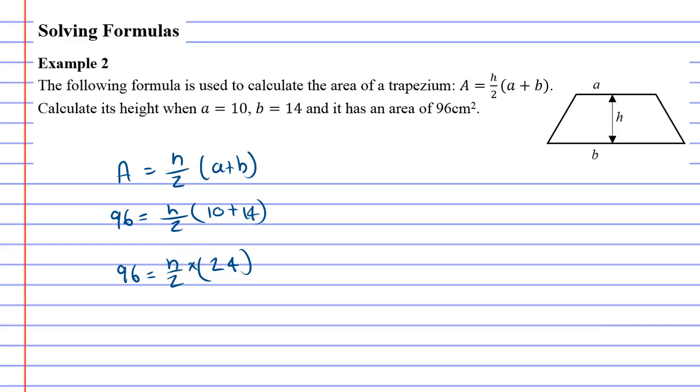So, what are we going to do? Well, h is being divided by 2, and it's being multiplied by 24. Division and multiplication are equal, so we can do either one first. I usually like to focus on division first. So, the opposite of divide by 2 is times 2.